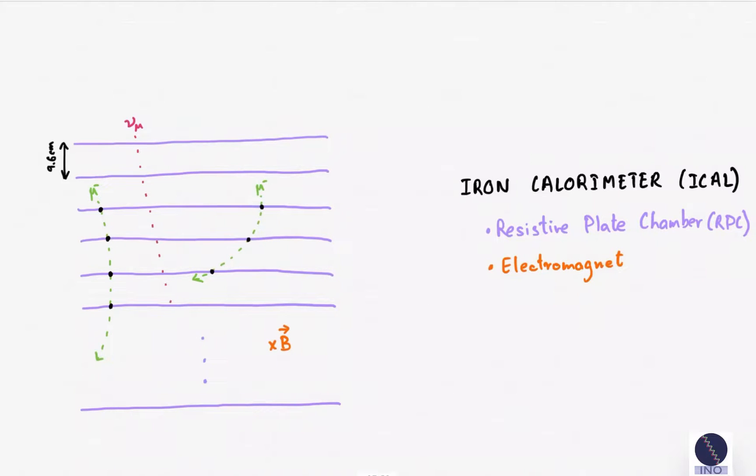Neutrinos will almost always go through everything, including the RPCs. So, how do we detect neutrinos?